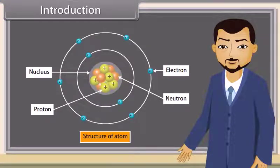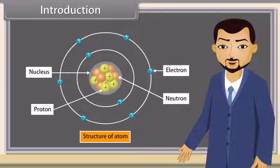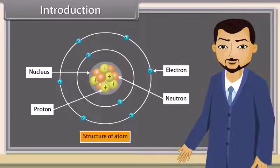As you know, all objects are made up of different materials like plastic, rubber, iron, etc. They have different arrangements and types of molecules. And a molecule is a group of two or more atoms. So the fundamental unit is the atom. So students, let us discover more about atoms.